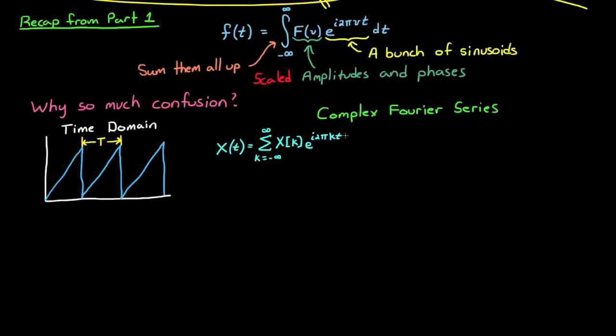The transform pairs look like this. A pair is both the forward and inverse functions together. They're called pairs because the two equations undo each other. If you plug the answer from one into the other, you'll get back your original function.